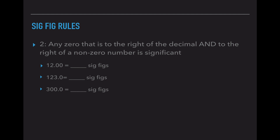For rule number two, I like to call this the double or nothing rule. Both of these statements have to be true — rules two, three, and four all have to do with zeros. If the zero is to the right of the decimal and to the right of a non-zero number, it is significant. For the first example, 12.00: the 1 and 2 are automatically significant. Both zeros are to the right of the decimal and to the right of a non-zero — they do not have to be directly next to them, just somewhere to the right. For 123.0, the three non-zeros are automatically significant, and the zero is to the right of a non-zero and to the right of the decimal — so four sig figs.